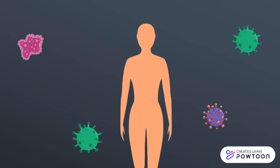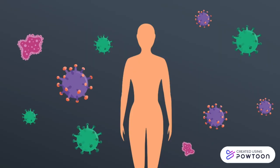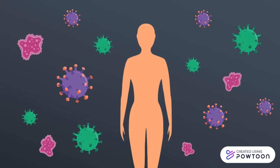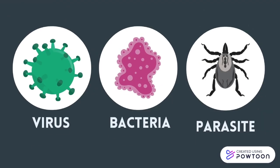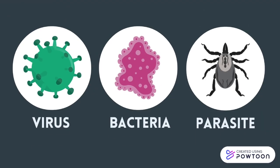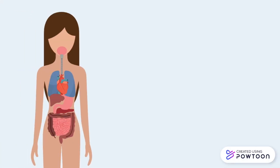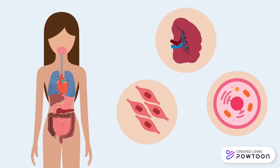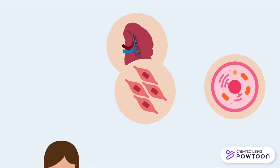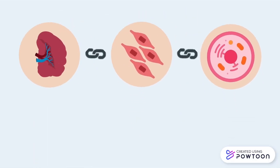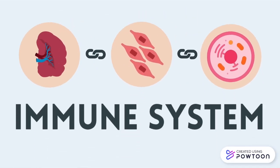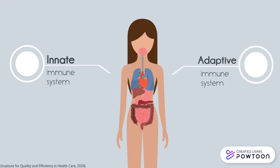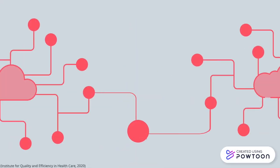Every day, billions of tiny invaders called pathogens — which include viruses, bacteria, and parasites — want to enter our body. Luckily, we have a powerful army of specialized organs, cells, and tissues that work together to protect us. This is our body's immune system, which can be separated into the innate and adaptive immune systems — both are closely linked and work together.